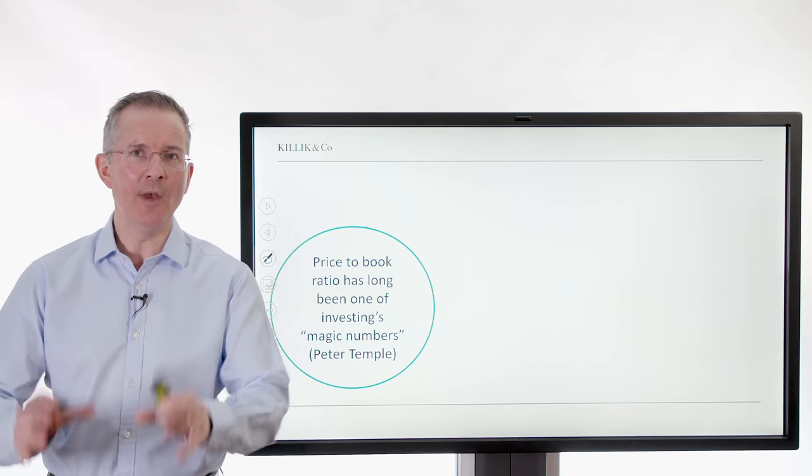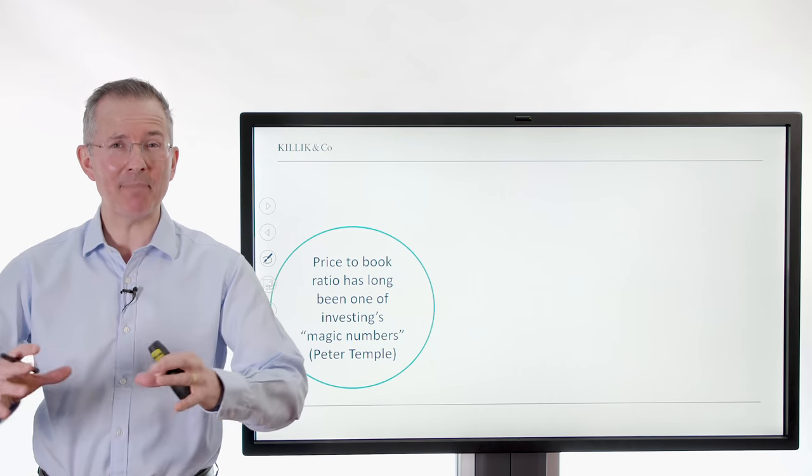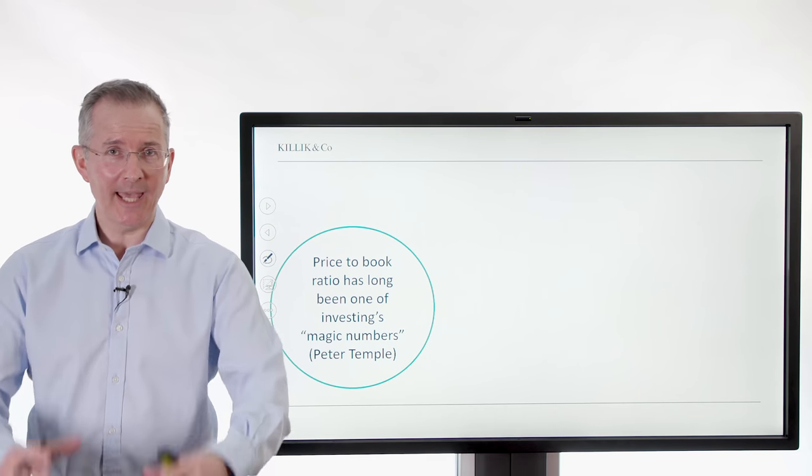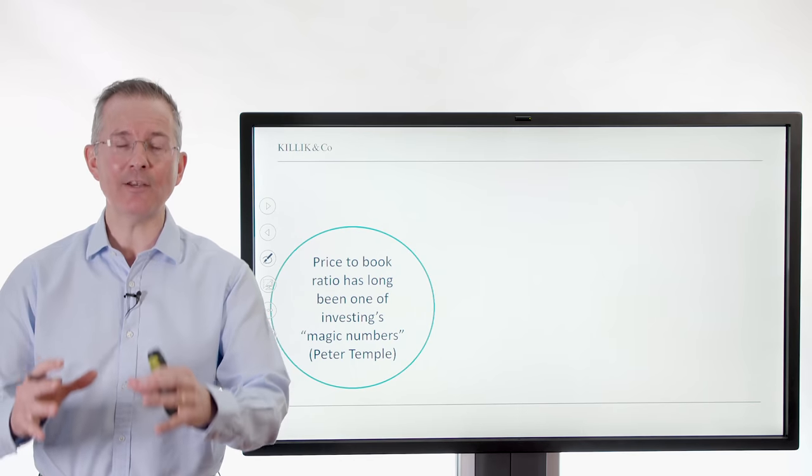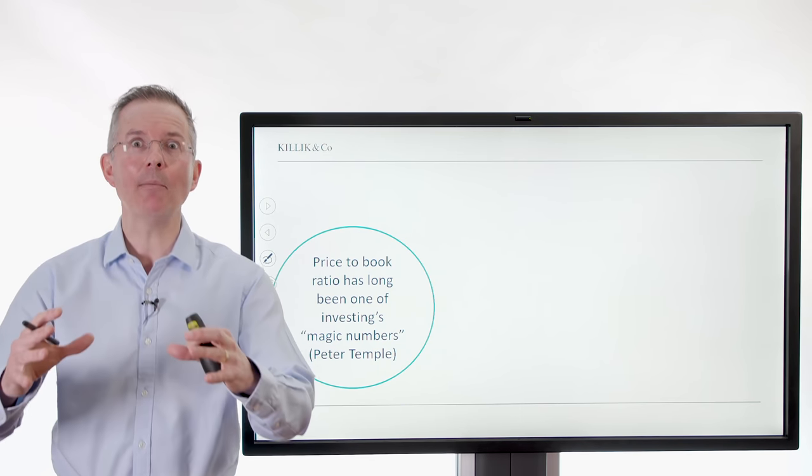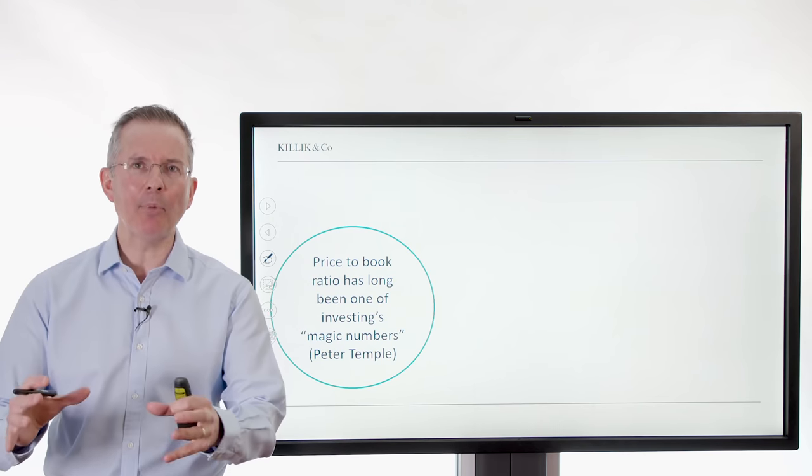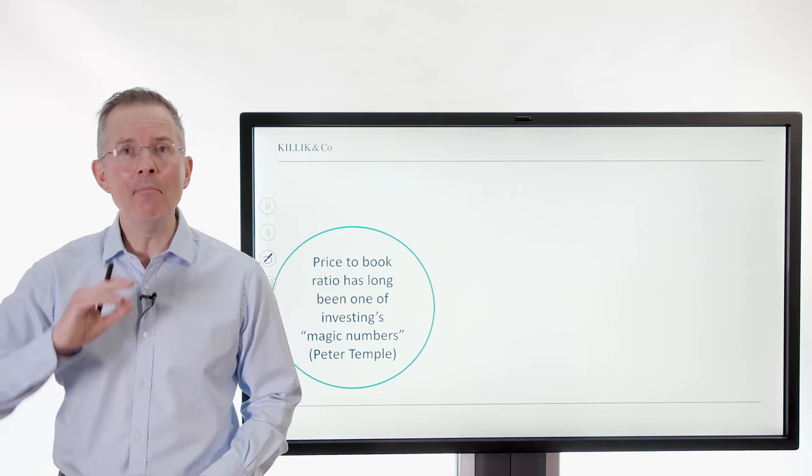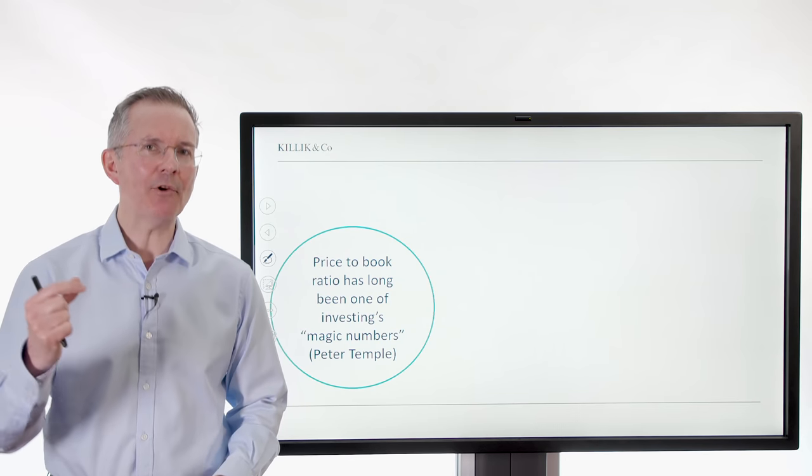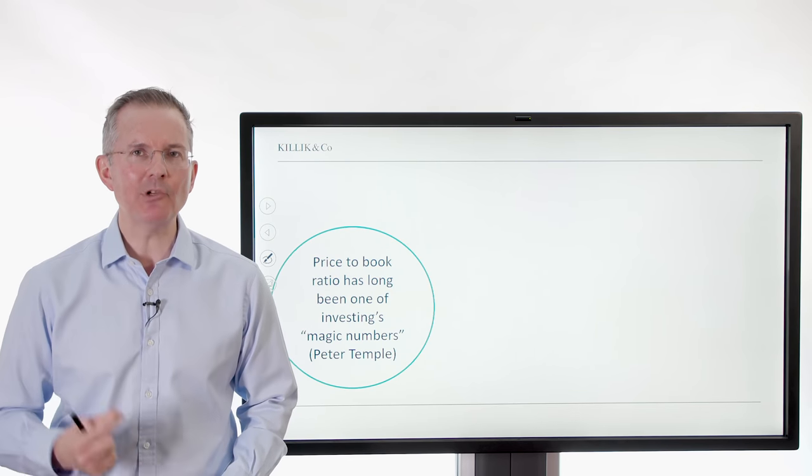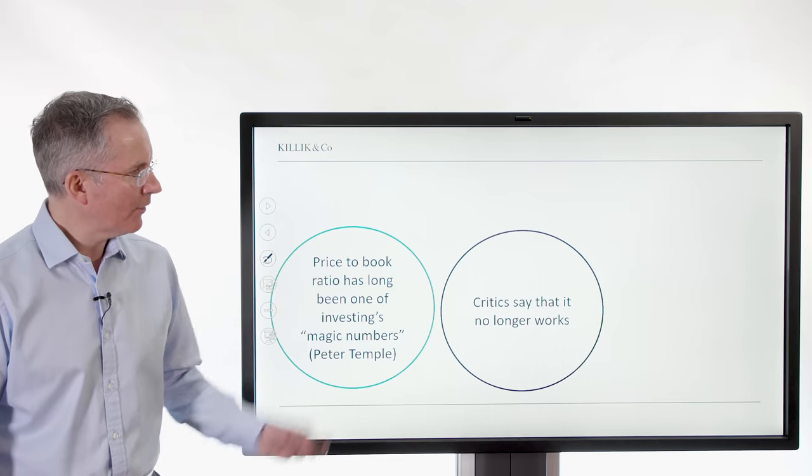First of all, what is the magic number? It's the price to book ratio. This is quoted by people like Ben Graham. It's decades old, it's a stalwart of the value investor's approach, part of their bible if you like. And it's long been one of the magic numbers Peter Temple coined that phrase amongst others many years ago. So it's seen as a key metric when it comes to weighing up is a firm cheap or is it expensive.